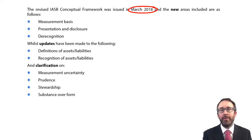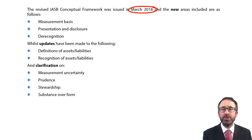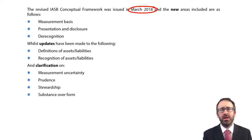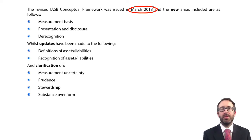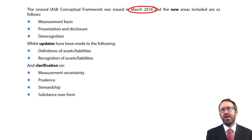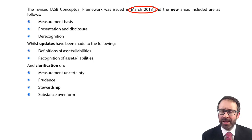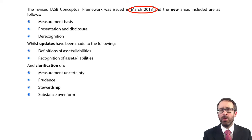A little bit more has been added to clarify measurement uncertainty. Prudence was taken out in the previous framework but has now been added back in because it was still relevant within standards such as provisions and inventory. Stewardship — talking about the directors running the business on behalf of the shareholders — has been brought into the framework. And in the previous version, substance over form was removed from the qualitative characteristics, but it has now been brought back in to ensure we apply substance as opposed to legal form.